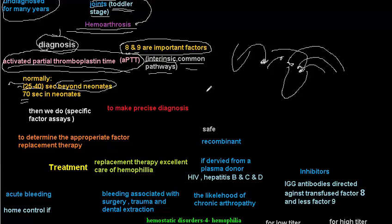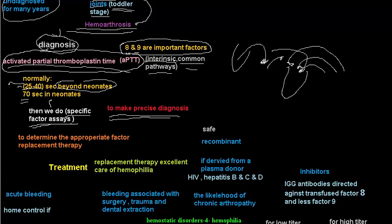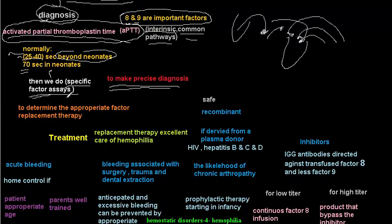After finding a prolonged aPTT, the next step is to perform specific factor assays. These assays identify precisely which factor — factor 8 or factor 9 — is deficient, allowing a precise diagnosis of hemophilia A or B and guiding the appropriate factor replacement therapy.